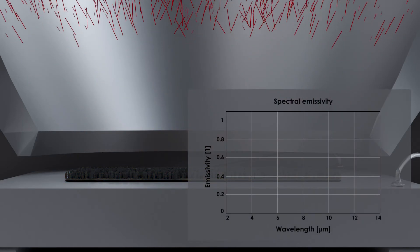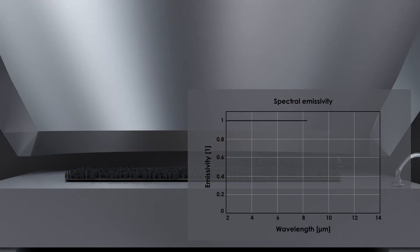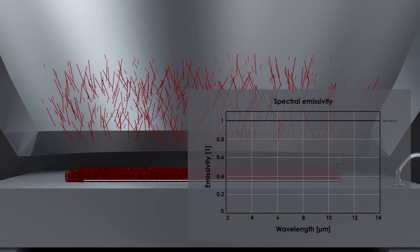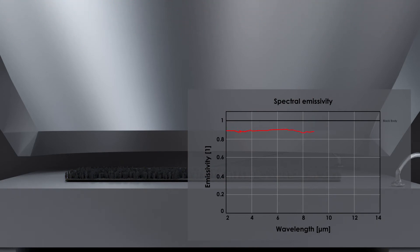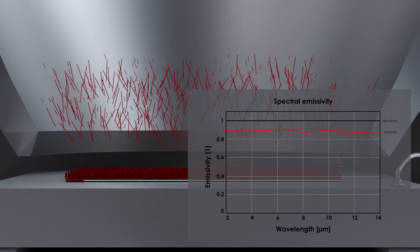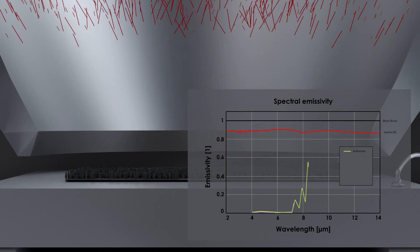For an idealized black body emitter, the emissivity is 100% over the entire infrared wavelength range. In reality, this is not technically feasible. But Exatris infrared sources come very close to this ideal due to the irregularly structured black platinum layer.